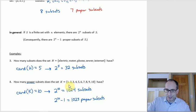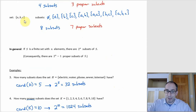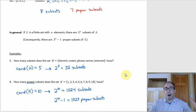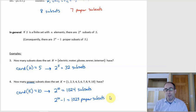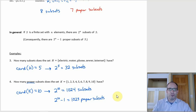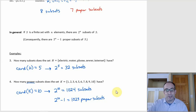These numbers snowball quickly. Even a set that only has 10 things in it leads to 2^10, which is a pretty big number — I wouldn't want to write out all 1024 possible subsets. That's why we have this shortcut: two raised to the cardinality gives you the number of subsets, and consequently the number of proper subsets, really fast without having to list every single one.